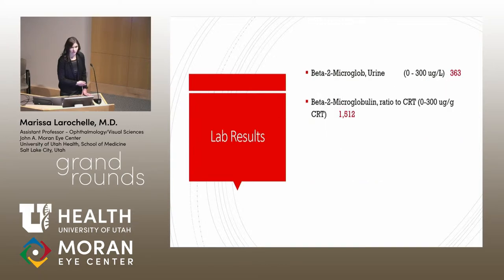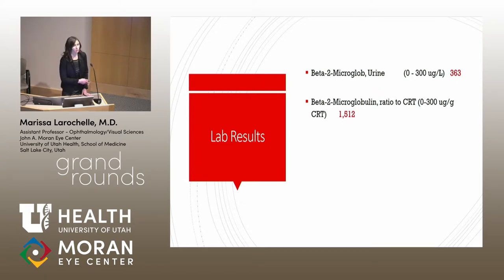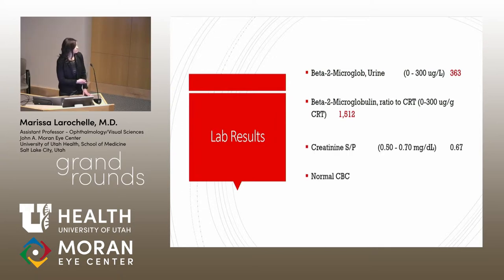The laboratory results revealed an elevated beta-2 microglobulin in the urine. The normal range is shown in gray and his values in red — the beta-2 microglobulin ratio to creatinine was very elevated at 1500. Notably, the serum creatinine was normal and he had a normal CBC, meaning that if you're just checking routine labs with the CMP and CBC, you would miss this diagnosis.